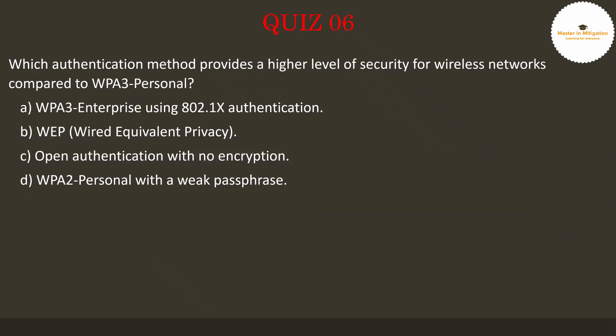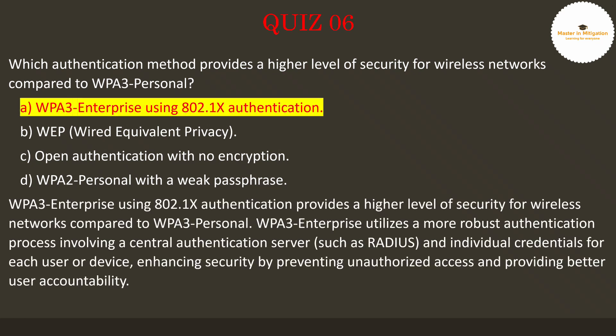Let's proceed to the next question. Question 6: Which authentication method provides a higher level of security for wireless networks compared to WPA3 personal? Pause the video now to select the best answer. The answer is A: WPA3 Enterprise using 802.1x authentication. WPA3 Enterprise using 802.1x authentication provides a higher level of security compared to WPA3 personal. It utilizes a more robust authentication process involving a central authentication server such as RADIUS and individual credentials for each user or device, enhancing security by preventing unauthorized access.